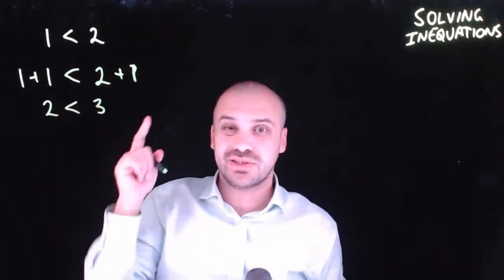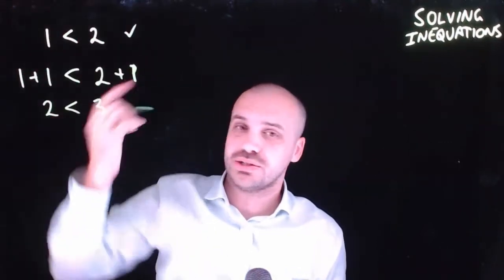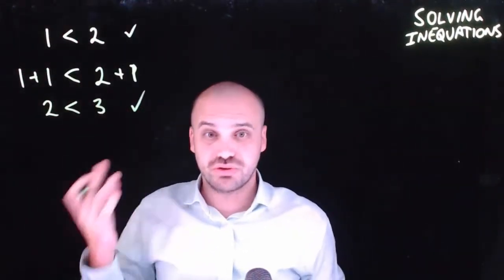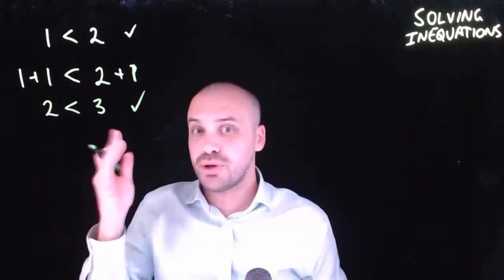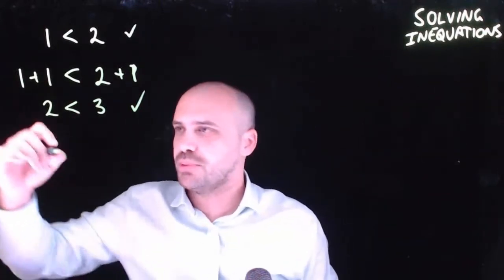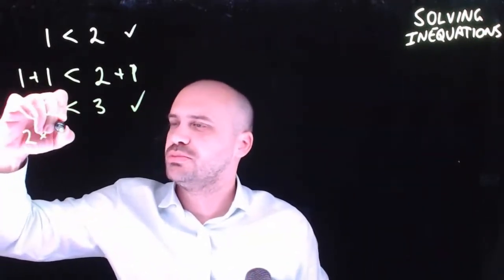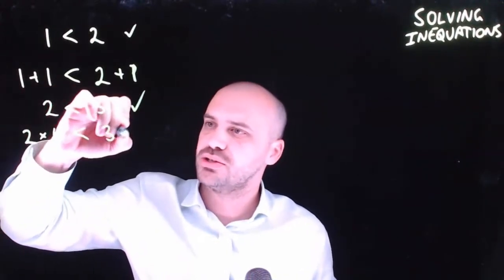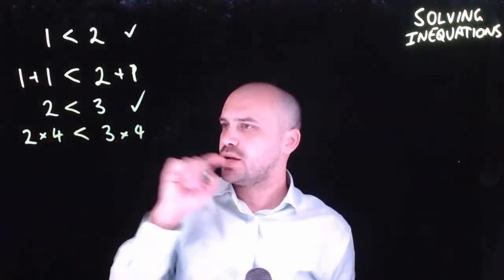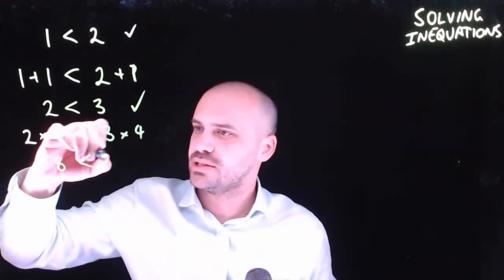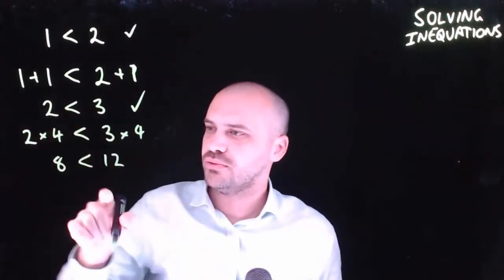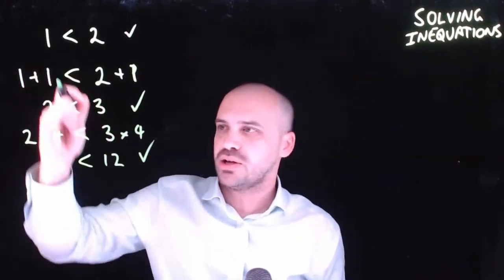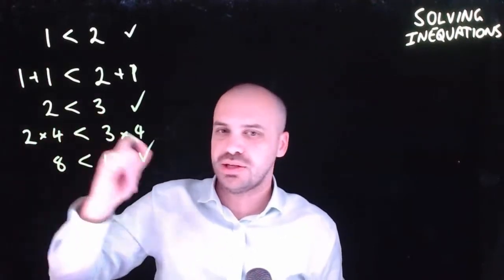Adding 1 to both sides gives 2 is less than 3 — the inequality is still true. 1 is less than 2 was true, and 2 is less than 3 is also true. Now let's multiply both sides by 4: 2 times 4 is less than 3 times 4, giving 8 is less than 12. That inequality is still true.